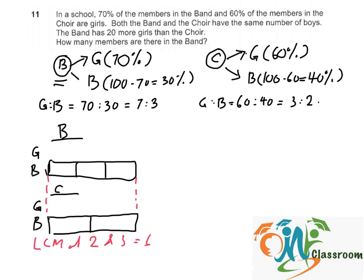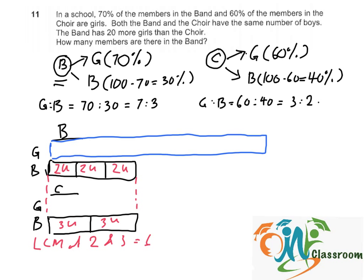That means dividing each of the band's boy units into 2 smaller units each, and dividing each of the choir's boy units into 3 smaller units each, giving us 6 units for both boys in band and boys in choir. With this, we can draw the model for the girls. The girls in the band have 7 units, and each unit is further divided into 2.